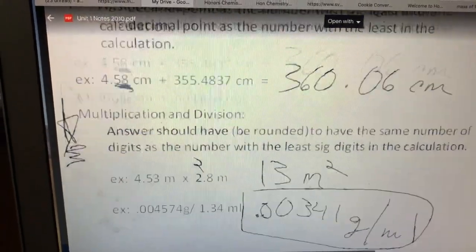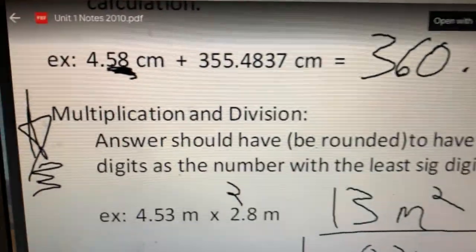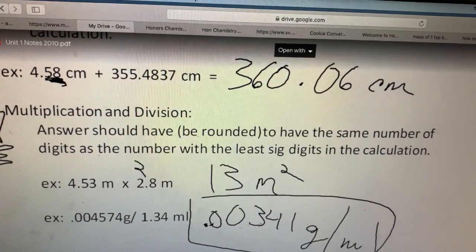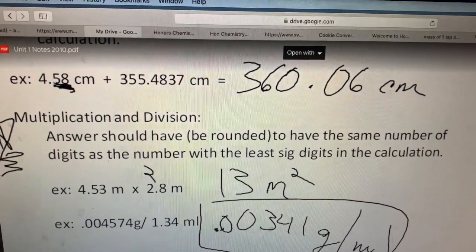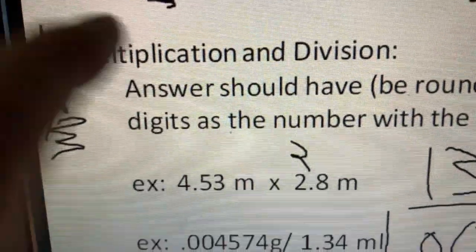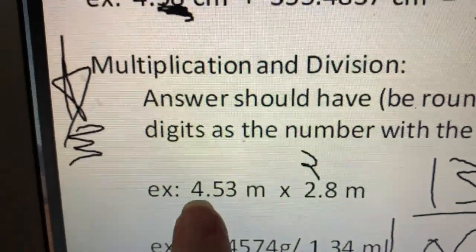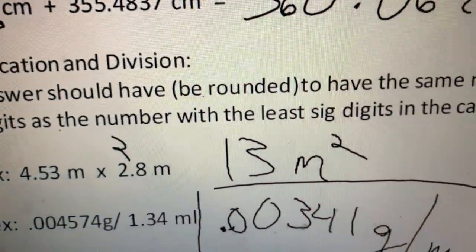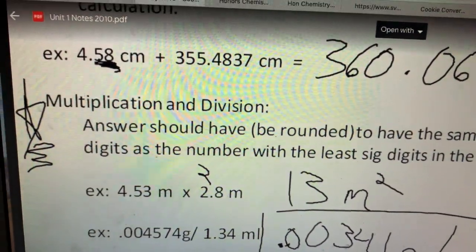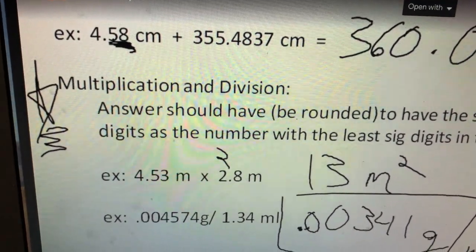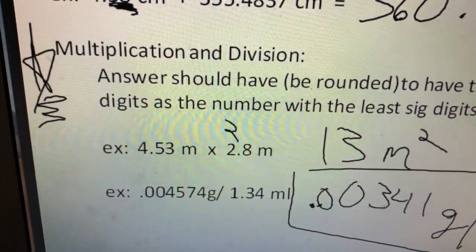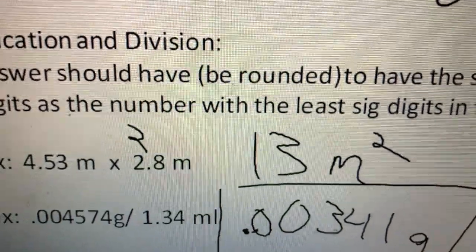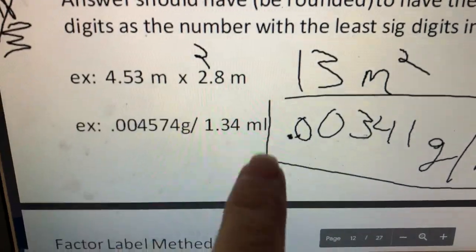Now the more important one is for multiplication and division. In multiplication and division, you can see I even have a star there in my notes because this is the one we're going to be using all of the time. The answers should have, which means you have to round it, you have to do it to have the same number of digits as the number with the least significant figures in the calculations. So let's look at this. 4.53 meters times 2.8 meters. 4.53 has three significant figures. 2.8 only has two. Whatever I get in my calculator I have to round it so your answer just has two. So in that case you're going to get 13 meters squared because when I actually put it into my calculator, 4.53 times 2.8, I get 12.684. Well if I'm going to round 12.6, I'm rounding that up and I only can have two digits, that's 13. Don't forget to have your label there.